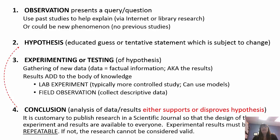Once you have your results, you're going to analyze them to come up with your conclusion. It's going to either support or not support your hypothesis. If it supports your hypothesis, you're usually going to publish your research in a journal so that everybody can have access to it. Your results must be repeatable or your research can't be validated. If it is not supported, you go back to your hypothesis and modify it.